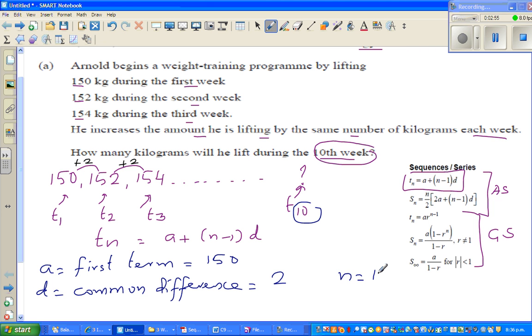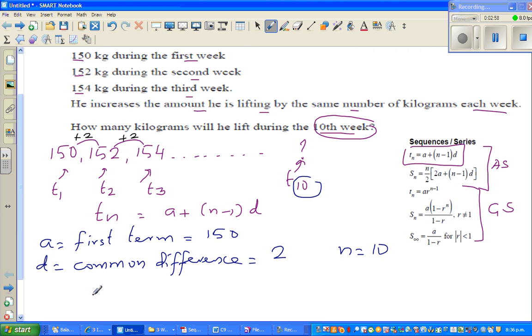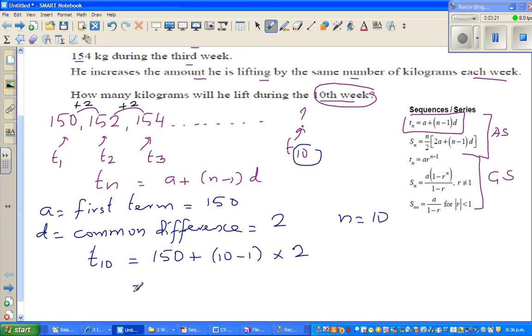We want to find t10, so we know a is 150, d is 2, and n is 10. In place of n I'm going to put 10, in place of a I'm going to put 150, and in place of d I'm going to put 2. So t10 = 150 + (10-1) times 2. Using BEDMAS, this is 9 times 2 which is 150 + 18 = 168 kg.